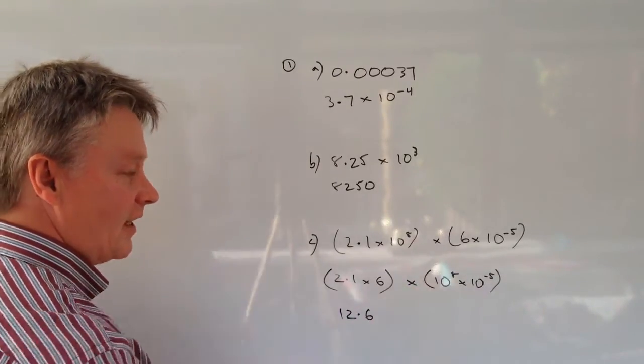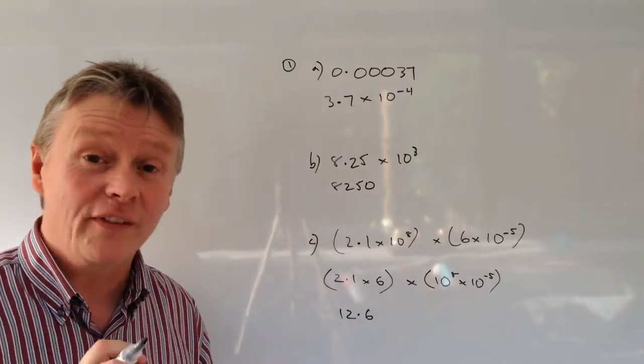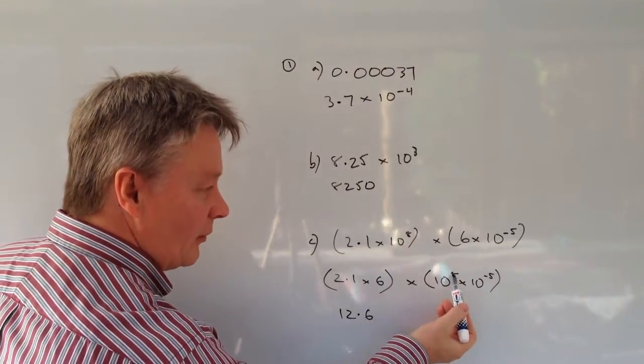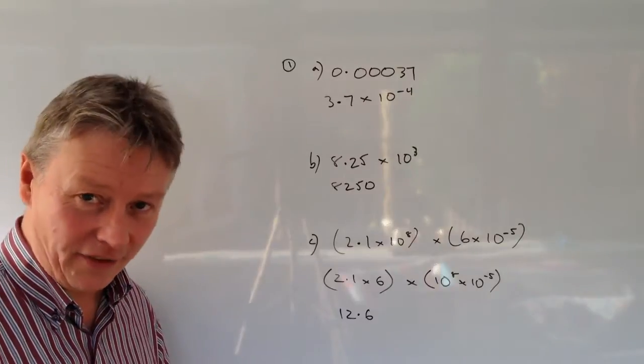And then 10 to the power of 8 times 10 to the power of minus 5 is the standard form part of it. Well, when we're dealing with indices of numbers we add them together. So you've got a positive 8 and a negative 5, so you imagine that you're adding those two indices together.